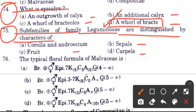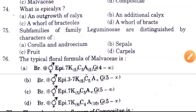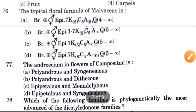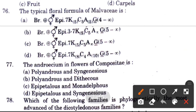Family Leguminosae and Rosaceae — from which character are these distributed? Options are corolla and androecium, sepals, fruit and carpel. The answer is B, sepals.